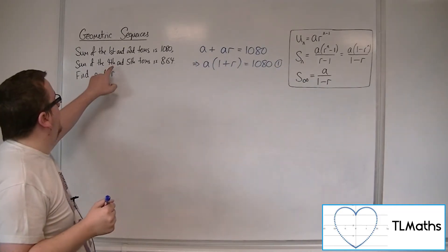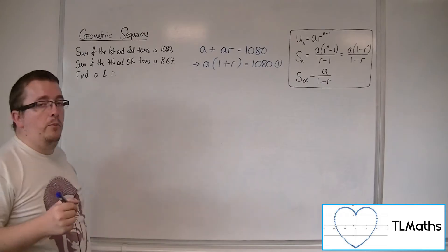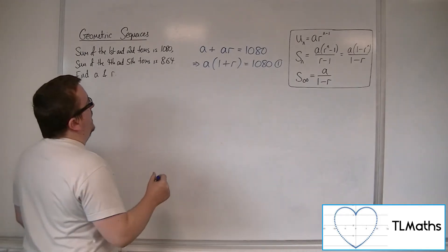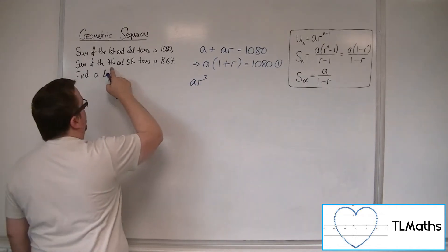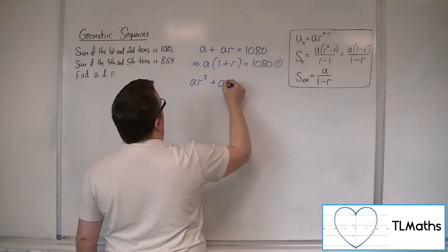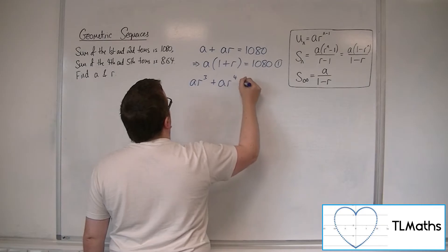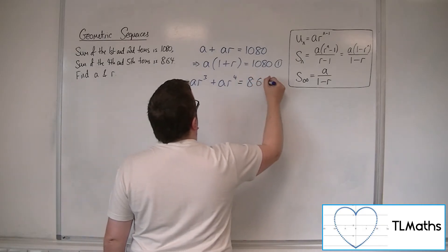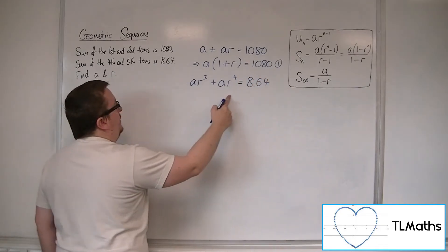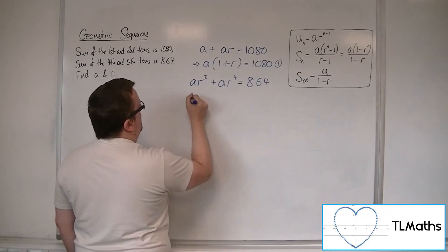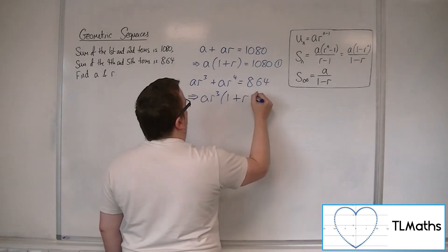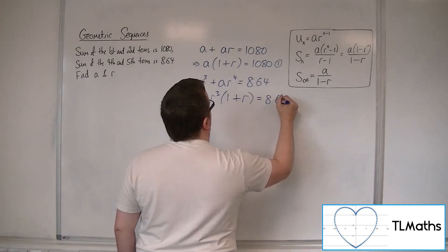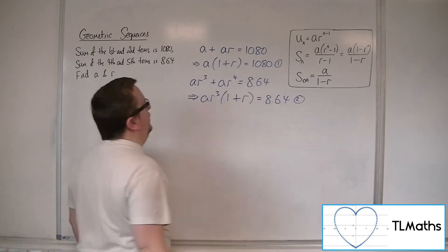If the sum of the fourth and fifth terms is 8.64, then I can say that A R cubed, that's the fourth term, and the fifth term is A R to the 4, equals 8.64. I can factorise that as well, bringing A R cubed out of a single bracket and have 1 plus R inside the bracket. That can be equation number 2.